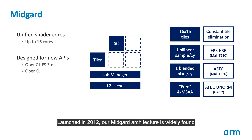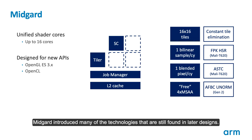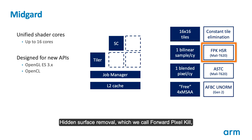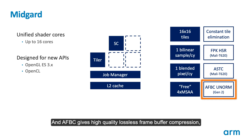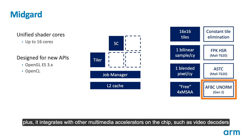Launched in 2012, our Midgard architecture is widely found in entry-level smartphones across the world. Midgard introduced many of the technologies that are still found in later designs. Hidden surface removal, which we call forward pixel kill, helps to optimize away occluded fragments. ASTC texture compression gives high quality and low bandwidth lossy texture compression for content artists. And AFBC gives high quality lossless frame buffer compression, plus it integrates with other multimedia accelerators on the chip, such as video decoders.